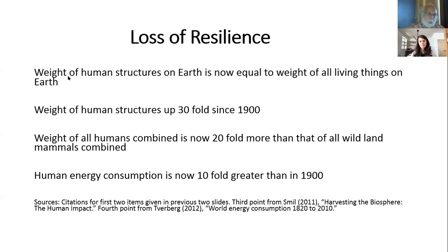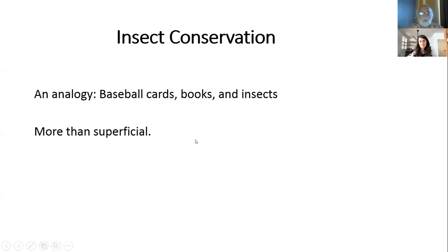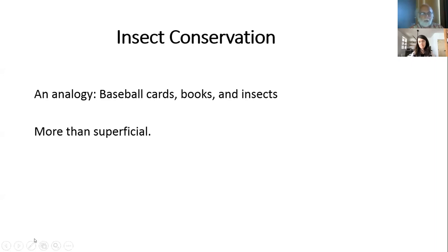I want to turn to the fourth and final part of my talk on insect conservation, and to do that I need to develop this analogy between baseball cards, books, and insects in a little more detail. This analogy is much more than superficial. The words 'loss of biodiversity' are deceptive to me, because when you say that, it doesn't evoke any emotion. Saying that we are 'burning the insect library' is a much more accurate description of what I think is going on.